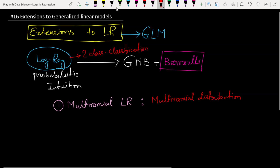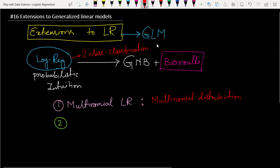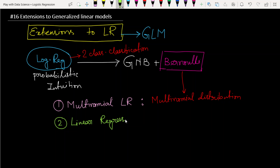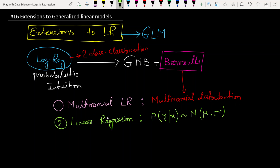If we want to build with multinomial distributions, then in place of Bernoulli distributions here we are using multinomial distribution. If we want to build linear regression, then in the place of Bernoulli distributions here we are using the probability of y given x, which follows the normal distribution with mean mu and variance sigma squared.